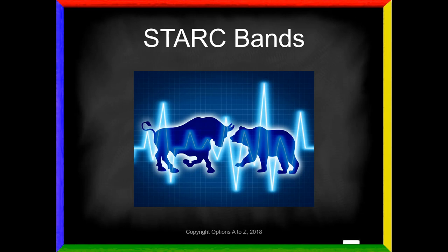This one is on STARC Bands. I've chosen this one for a couple of reasons. First, the last video I posted was on Wilder's Average True Range. You're going to find that STARC Bands are simply an extension of Wilder's Average True Range. I think it's helpful for new traders to understand that a lot of these indicators are simply extensions of previous ones. Too many times traders get overwhelmed with all the technical indicators out there, but the more you learn, the more you're going to find that a lot of them just build on previous ones.